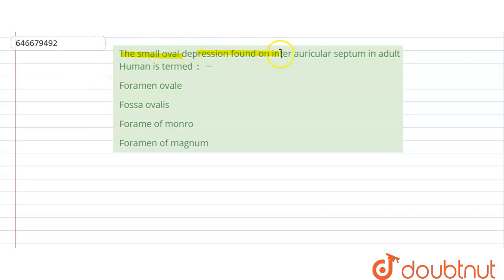The small oval depression found in inter-auricular septum in the adult human is termed as? So what happens in the case of the fetus? In the case of the fetus, we have the heart over here.